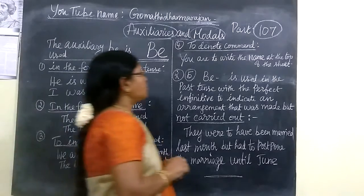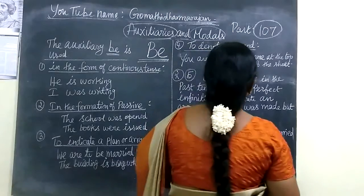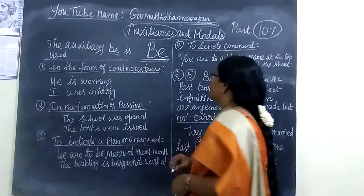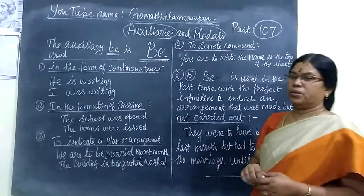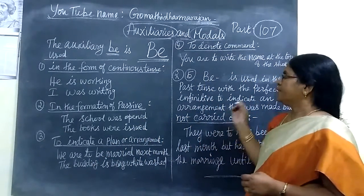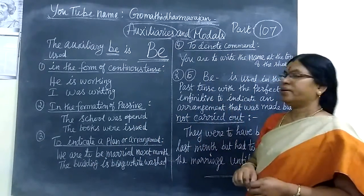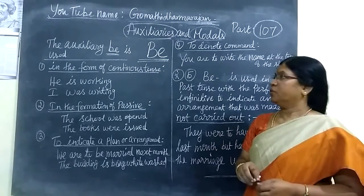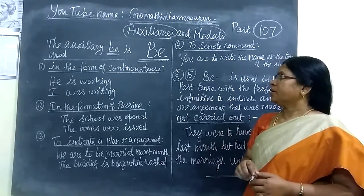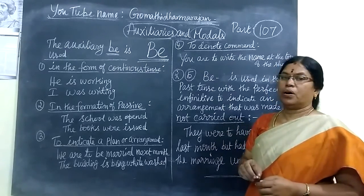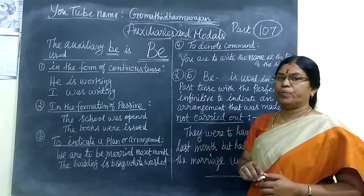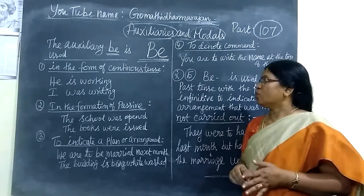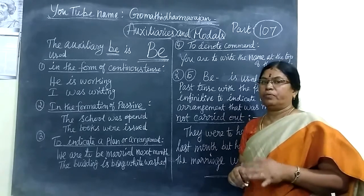Now we see Part 1 of 7: auxiliary verbs and modal verbs. Last lesson, auxiliary verbs and modal verbs were introduced. Auxiliary verbs use the be-forms — be, being — and is, was, or were.